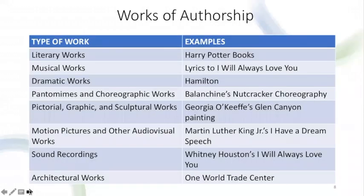Let's look more closely at what works of authorship can be with some examples. Works of authorship are the types of works that are eligible for copyright protection. Literary works include written works such as poems, novels, academic writings, or fiction — for example, the Harry Potter series. Musical works include song lyrics and underlying musical compositions, such as the lyrics to 'I Will Always Love You' written by Dolly Parton.